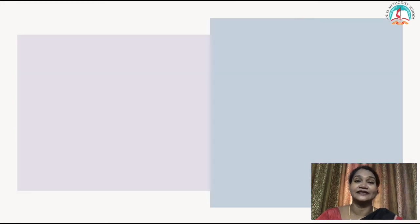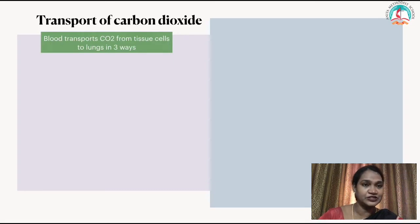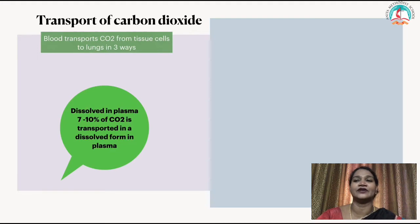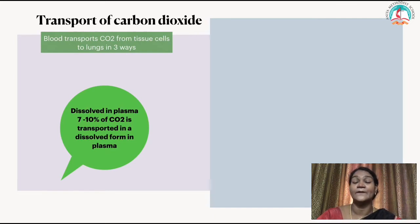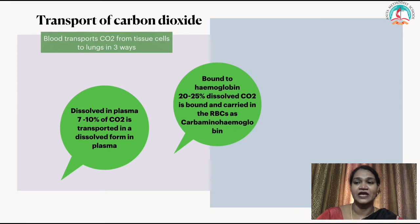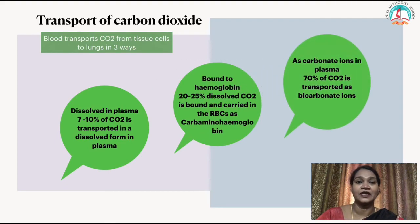Carbon dioxide is transported from tissues to lungs in three ways. First, dissolved in plasma — about 7 to 10% of CO2 is transported in dissolved form. Second, bound to hemoglobin — 20 to 25% is carried in red blood cells as carbaminohemoglobin. Third, as bicarbonate ion in plasma — around 70% of carbon dioxide is transported as bicarbonate ion.